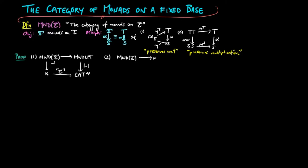And second, we also can realize the metacategory of monads on E as a fiber category of the forgetful functor from the metacategory of monad extensions to the metacategory of categories.